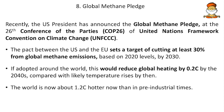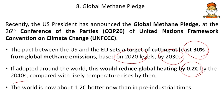Next, the Global Methane Pledge. The US president announced the Global Methane Pledge at COP26 UNFCCC Glasgow. The pact between the US and European Union sets a target to cut at least 30% from global methane emissions based on 2020 levels by 2030. If adopted worldwide, this would reduce global heating by 0.2 degrees Celsius by 2040. The world is currently about 1.2 degrees Celsius hotter than pre-industrial times.